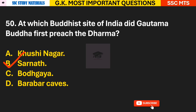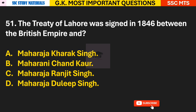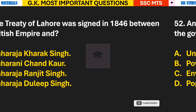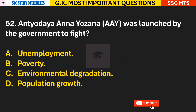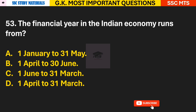Question 51: The Treaty of Lahore was signed in 1846 between the British Empire and whom? Answer D — the treaty was signed between the British Empire and Maharaja Duleep Singh. Question 52: Antyodaya Anna Yojana was launched by the government to fight what? Answer B — it was launched to fight poverty.